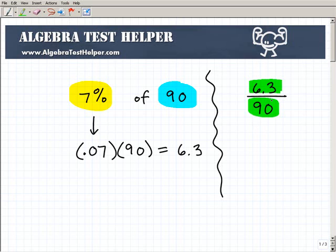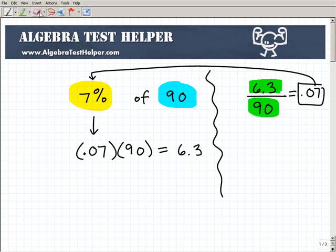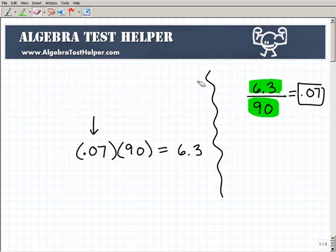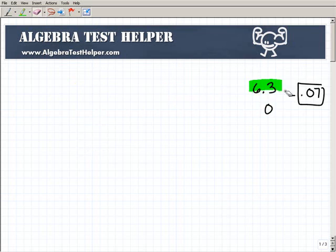So if you take 6.3 and divide by 90, you'll get this decimal, 0.07. Now, 0.07 as a decimal is the same thing as 7% written as a percent. So hopefully this makes sense. Let's do another example just to drill this home.